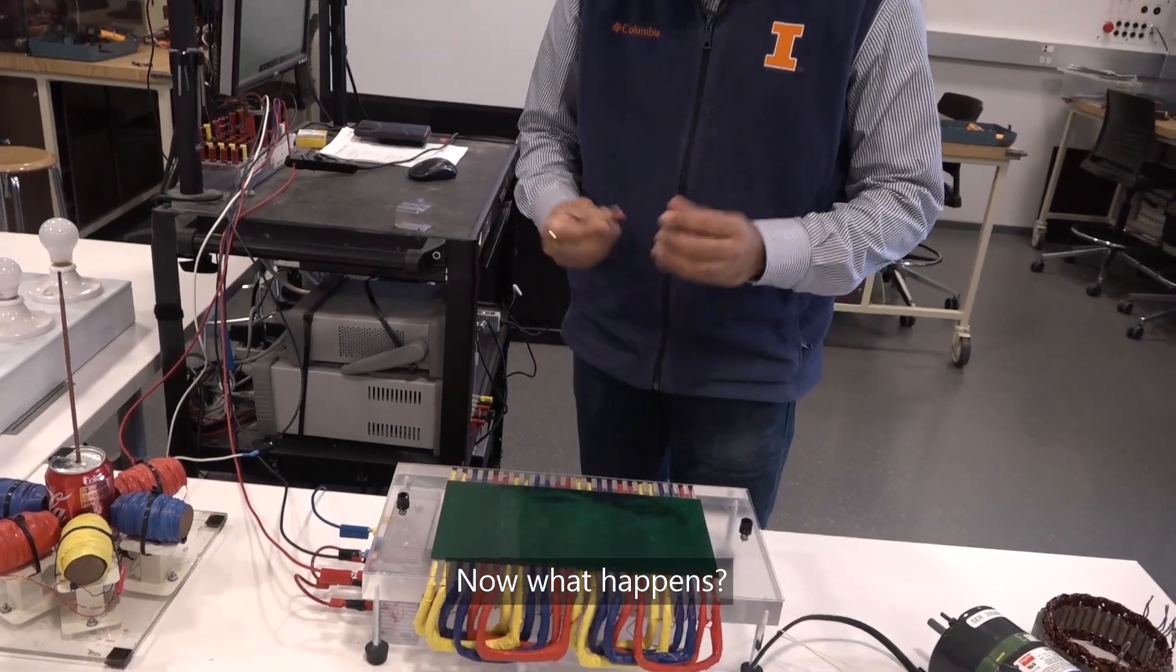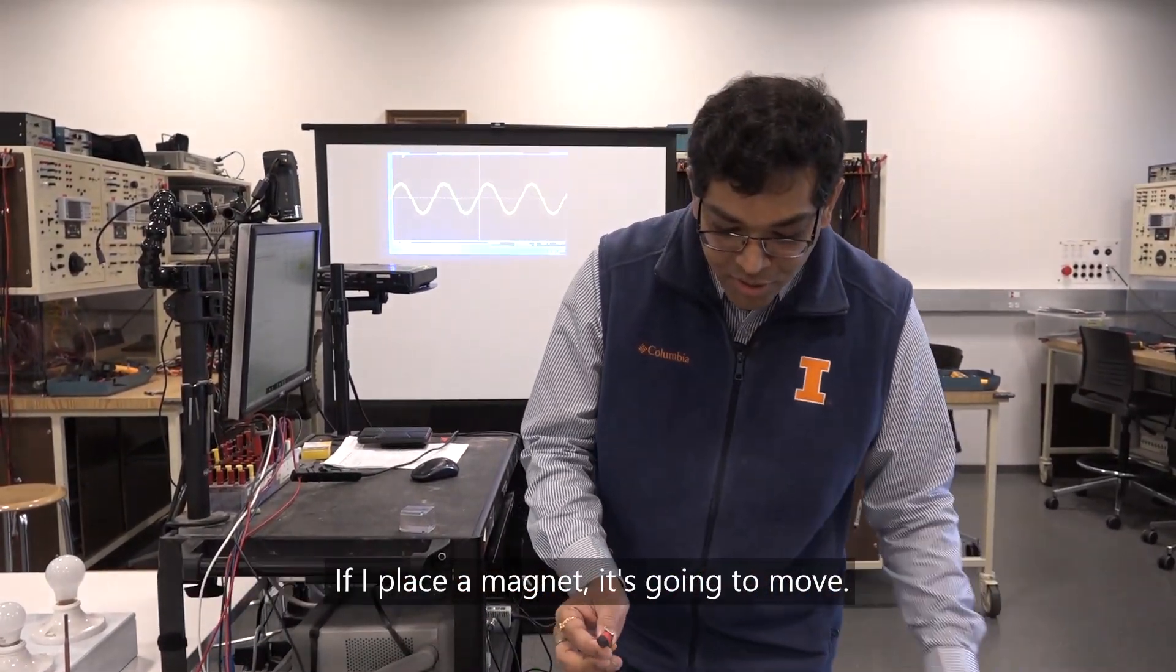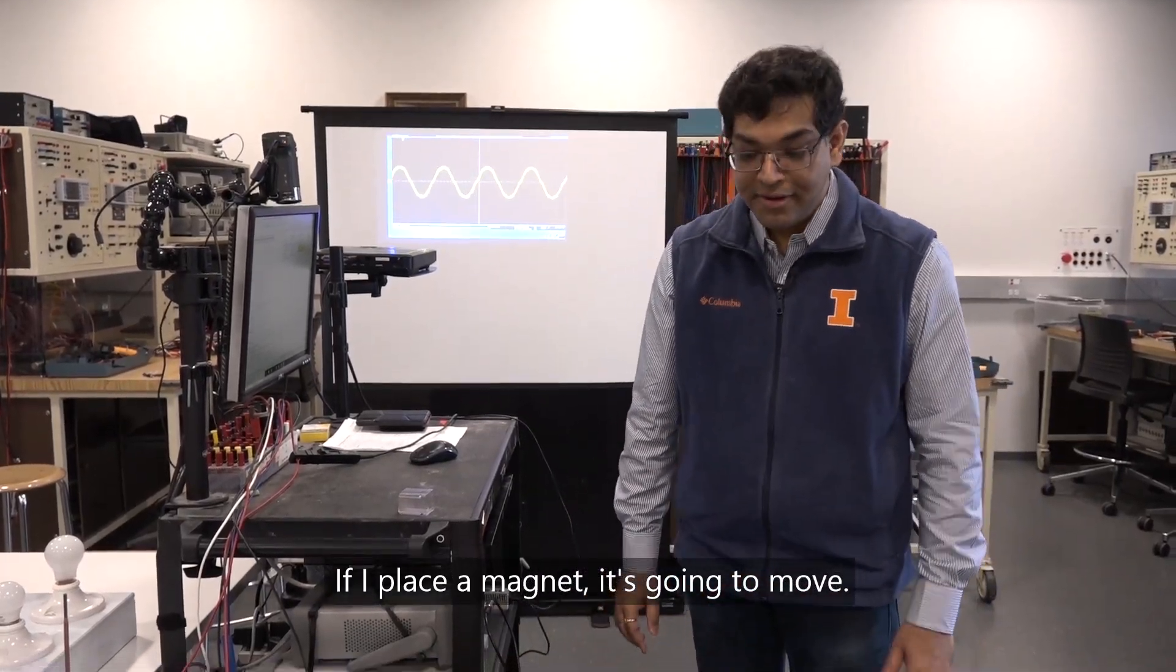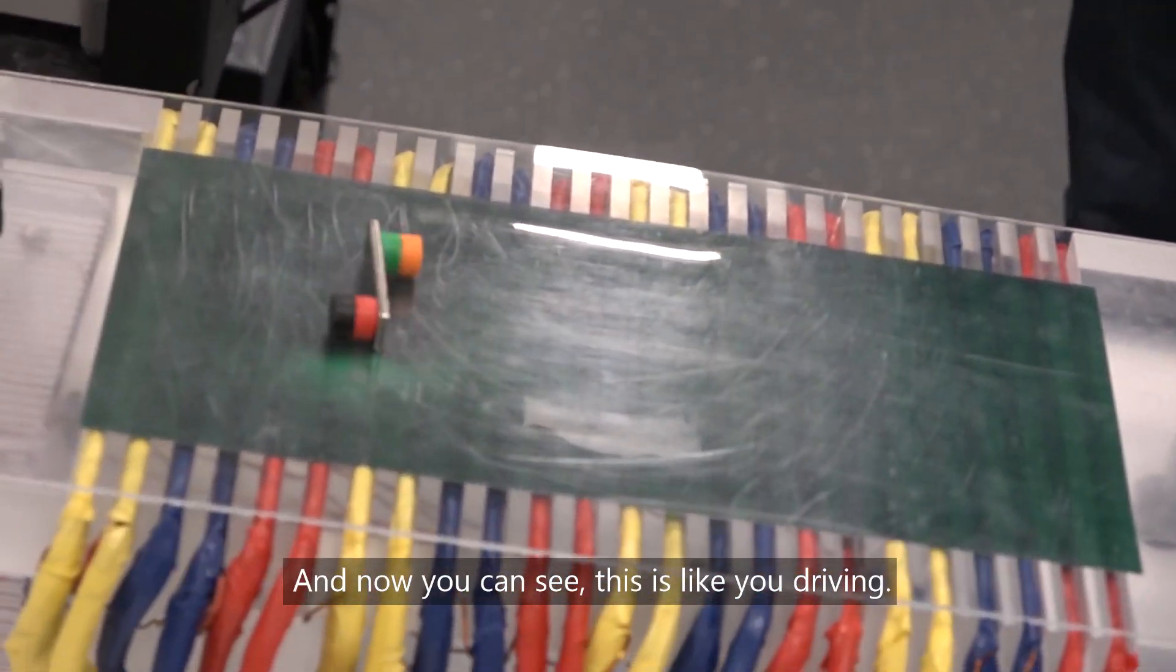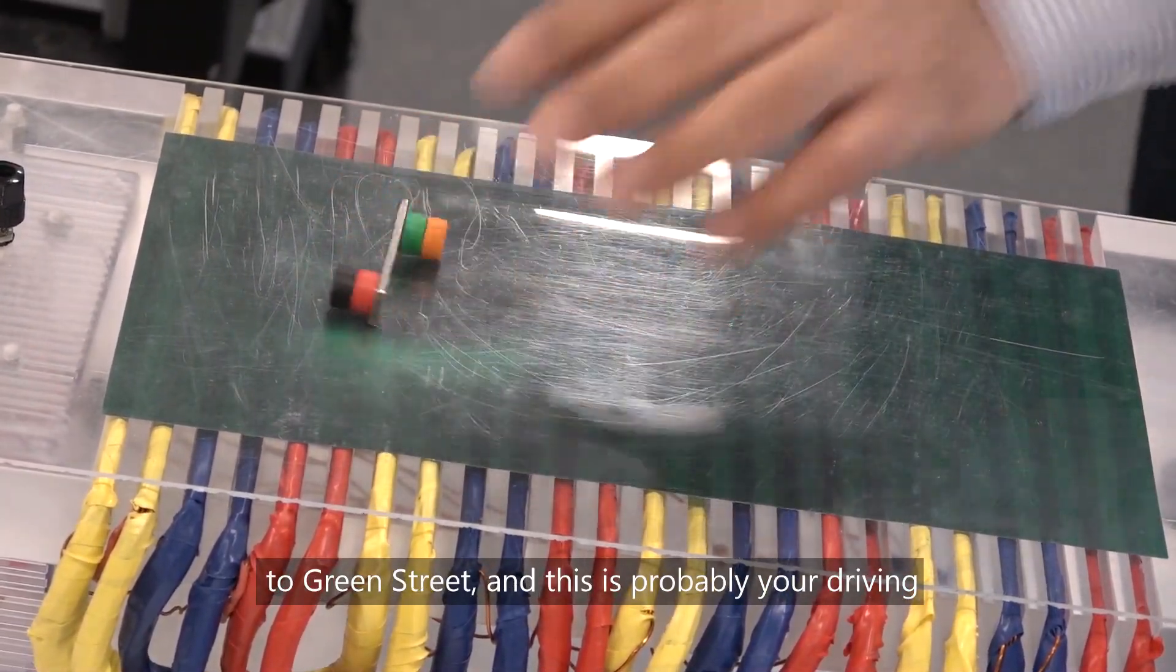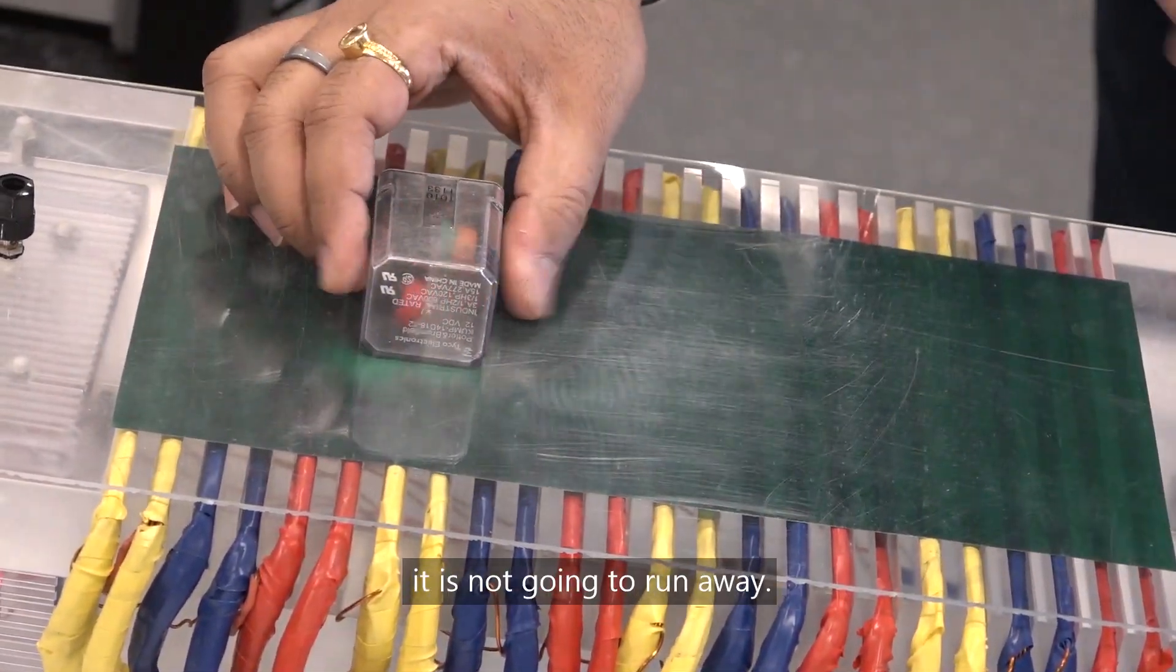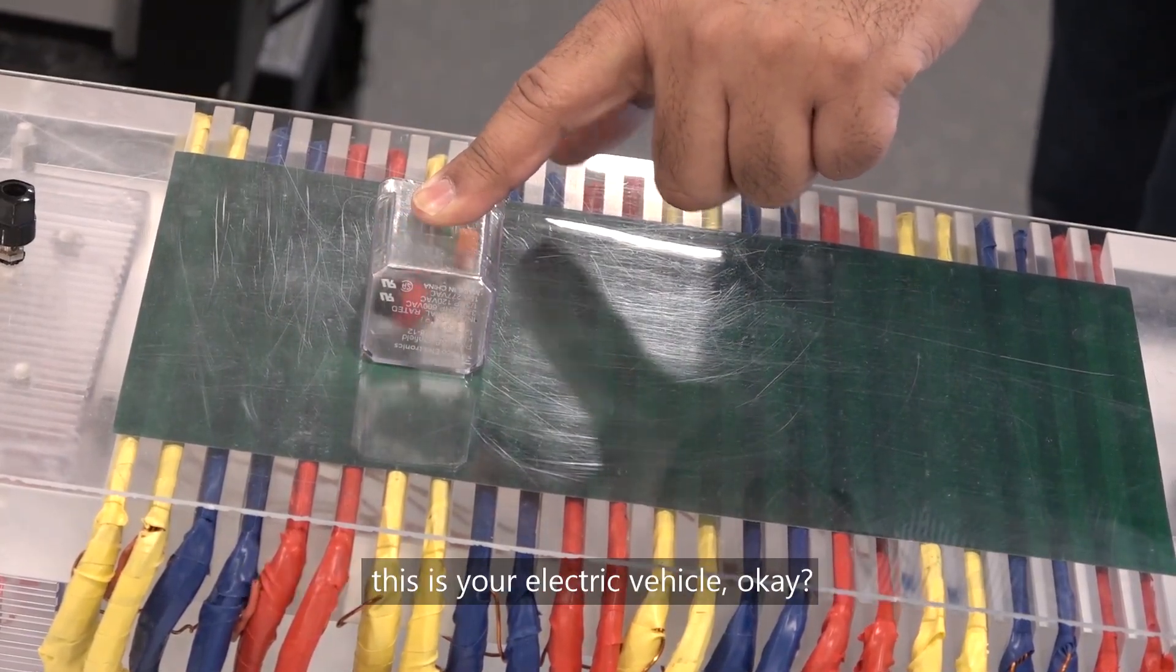Now what happens, say for example you're driving an electric car. If I place a magnet, it's going to move, and this is how the fundamental principles of electric machines are. You can see this is like you driving. If you come to UIUC Illinois, you'll probably be staying close to Green Street. This is you driving an electric vehicle. Let me put this in a cage so that it's not going to run away. You're driving on Green Street, and this is your electric vehicle.